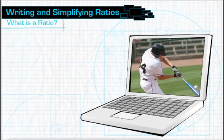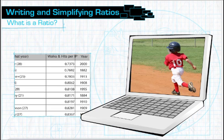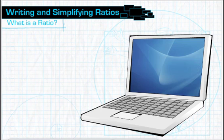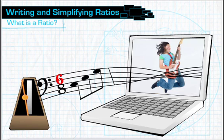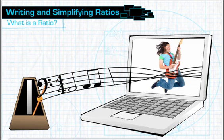They are used in sports with wins, losses, and hitting percentages. You see ratios in music written as a time signature. Every song has a ratio telling the musicians the number of beats in a measure compared to the note value that constitutes one beat.